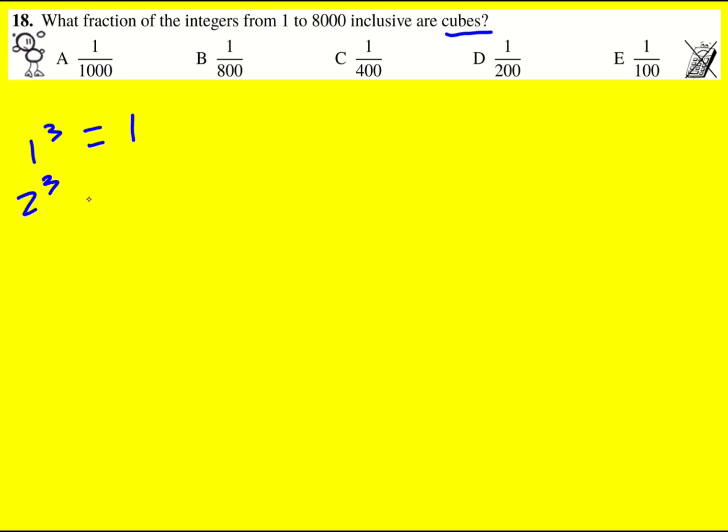1 cubed is 1, 2 cubed is 8, and so on. That means the second cube is 8. Let's have a look. 8,000.